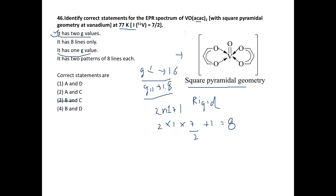This means part A — that it has two g values — is correct. We can cancel out options with only one g value. Option C is not correct. We are left with options 1 and 4: whether it has eight lines only, or whether it has two patterns of eight lines each.